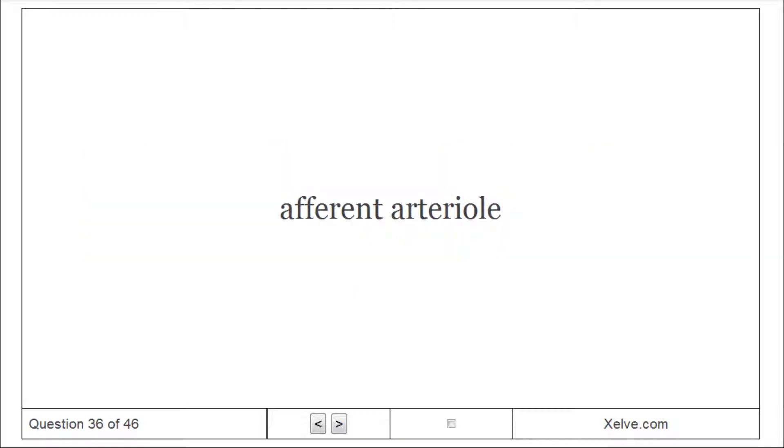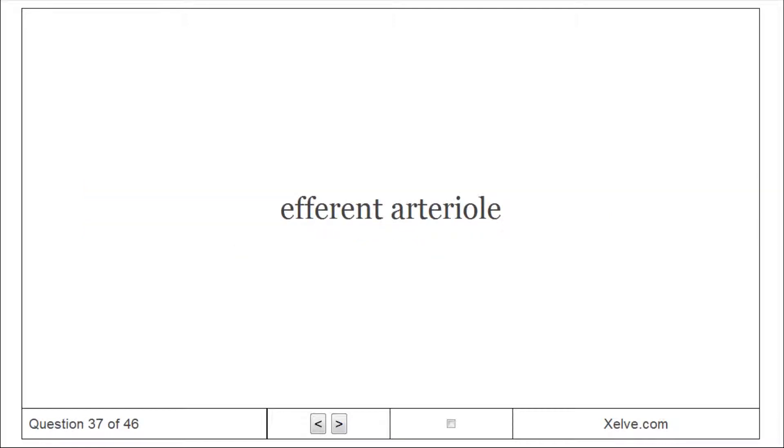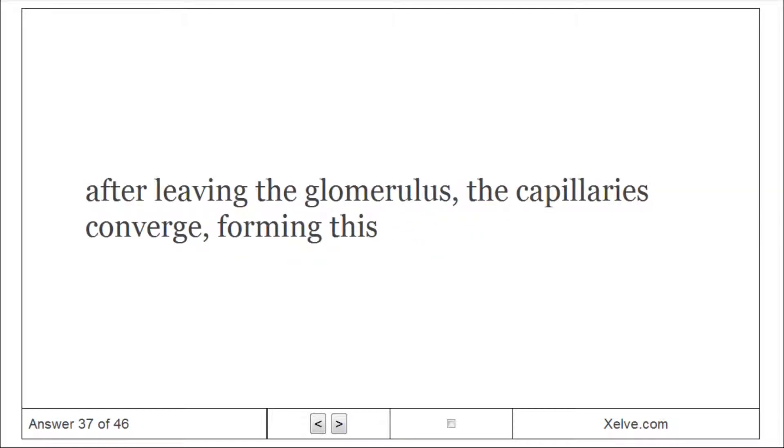Afferent arteriole: An offshoot of the renal artery that branches to form the capillaries of the glomerulus. Efferent arteriole: After leaving the glomerulus, the capillaries converge, forming this.